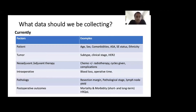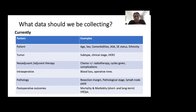So, what data should we be collecting? Currently we collect data around patients: their age, their sex, their comorbidities; around the tumour, such as clinical stage, subtype, and HER2 status if we're lucky. We also collect data around neoadjuvant and adjuvant therapy. We collect very little intraoperative data — really very little around blood loss or operative time — so we don't have a great idea of what's happening in the operating room. We also collect data around pathology such as resection margin and lymph node yield, which are commonly used as surrogates for surgical quality.